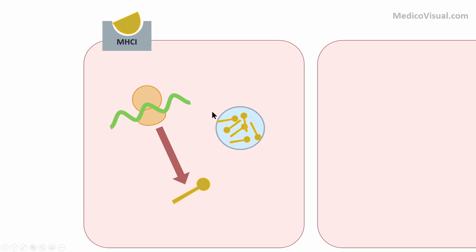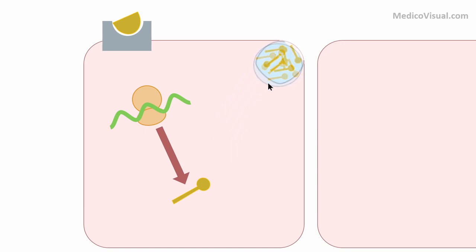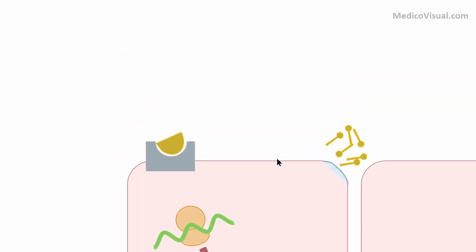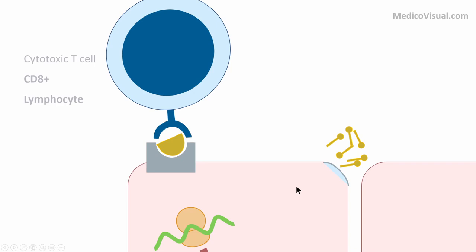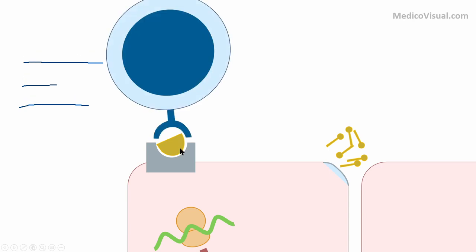Some of these spike proteins will also be synthesized and secreted outside the cell. Millions of different cytotoxic T cells with millions of different specificities are wandering in the blood, trying to find their specific antigen. The cytotoxic T cell — or CD8-positive lymphocyte — that is specific for this spike protein fragment will become active as soon as it encounters the spike protein fragment displayed on the MHC 1 receptor.